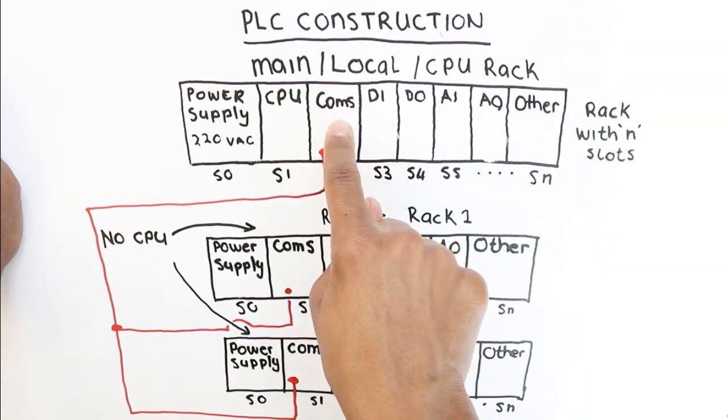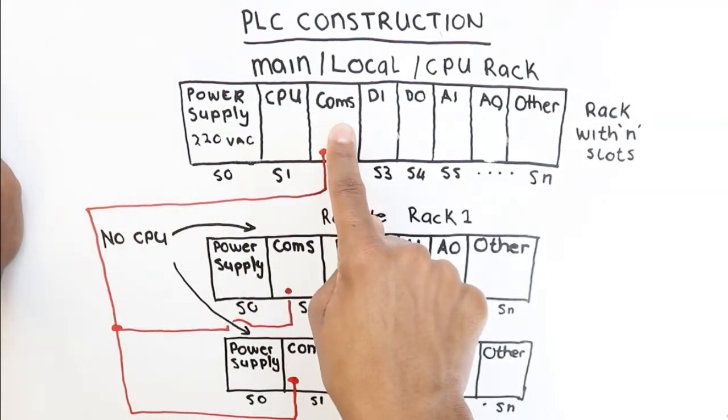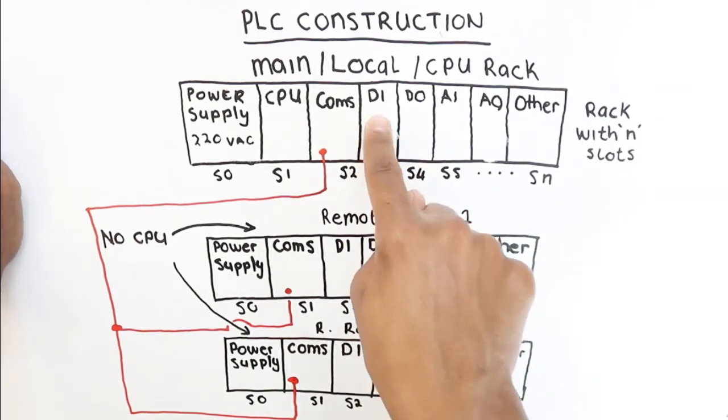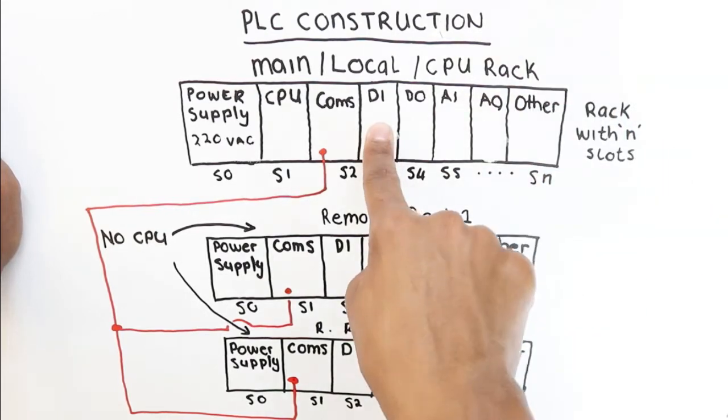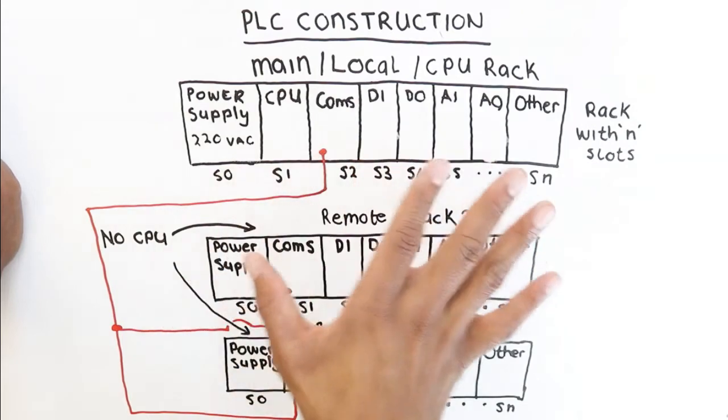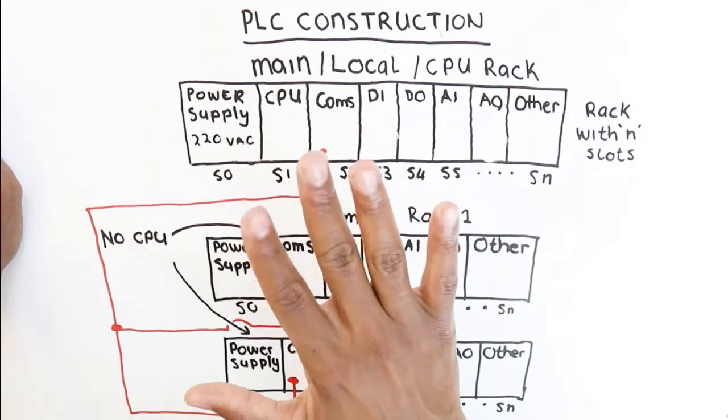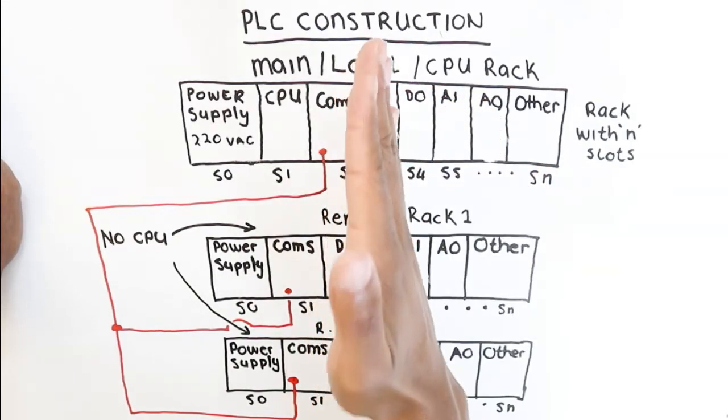When it comes to communication cards, you don't have to have one. If you want this PLC to communicate on another separate network, you can simply have another card for communication. In terms of flexibility, there's a lot of flexibility that a PLC would offer because of this building, scaling up configuration with the cards and the slots that you have.